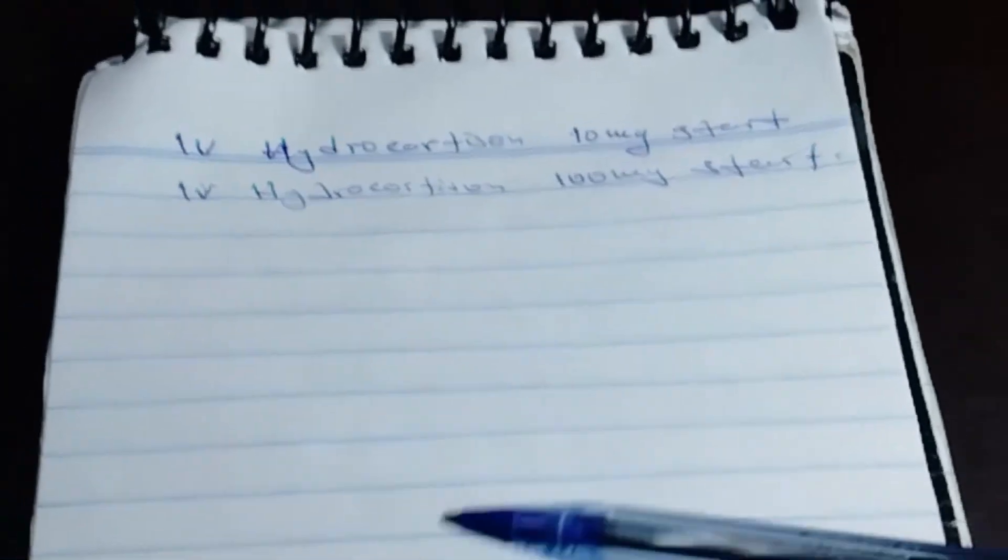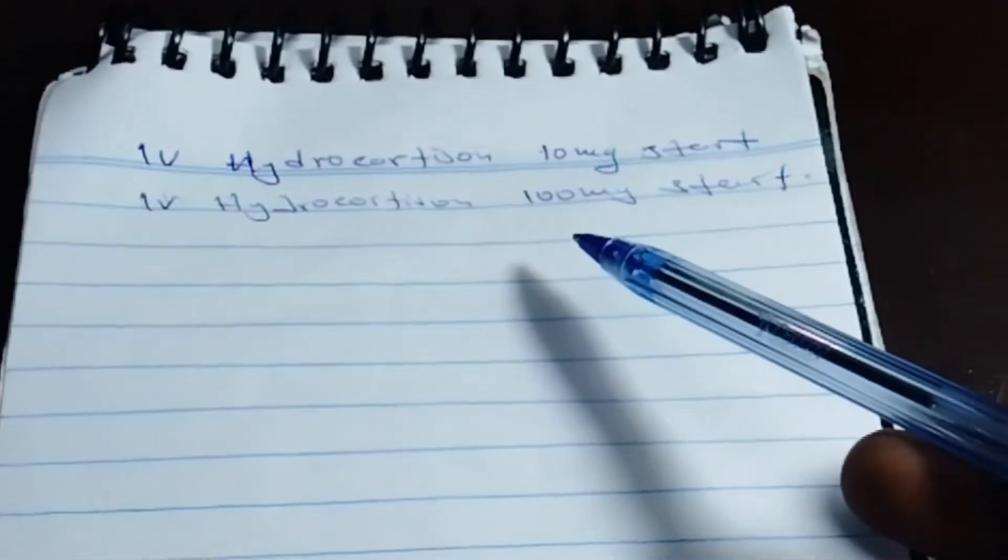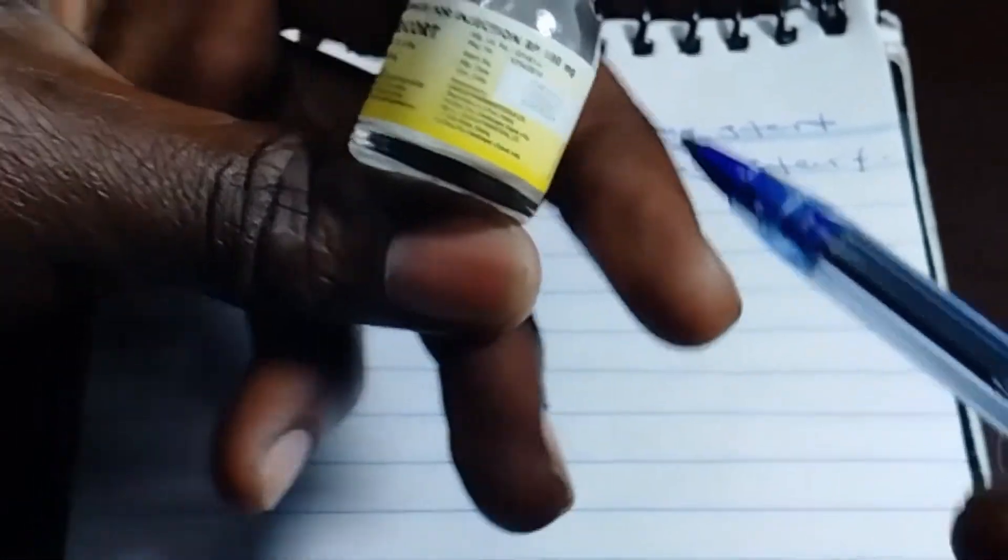We are going to see how we can get the milliliters from all these milligrams. So this hydrocortisone is having 100 milligrams.